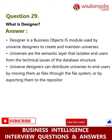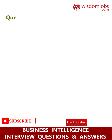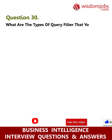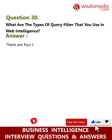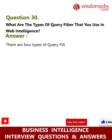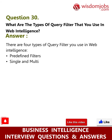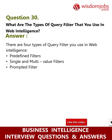Question 30: What are the types of query filters that you use in Web Intelligence? Answer: There are four types of query filters in Web Intelligence: predefined filters, single and multi-value filters, prompted filters, and complex filters.